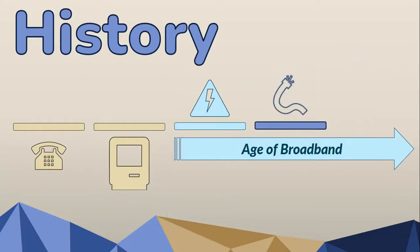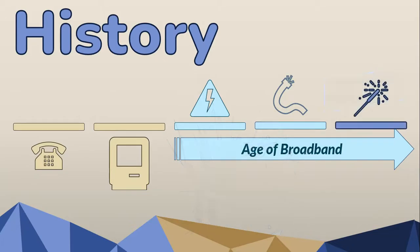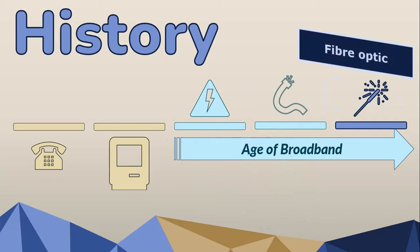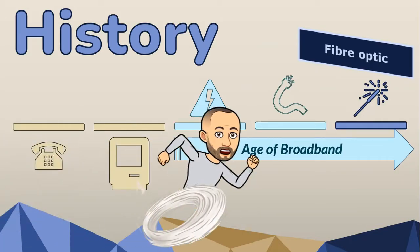In some countries, cable television providers recognized the potential to offer internet services over their existing coaxial cable networks, offering faster speeds compared to dial-up and becoming a popular choice for residential users. But fiber optic technology revolutionized data transmission by using thin strands of glass or plastic to transmit data as pulses of light. It offers incredibly high bandwidth and faster speeds over longer distances compared to traditional copper-based technologies, and fiber optic networks form the backbone of modern broadband infrastructure, enabling the delivery of gigabit speeds.